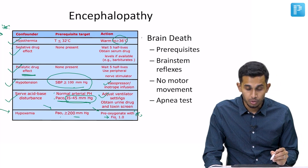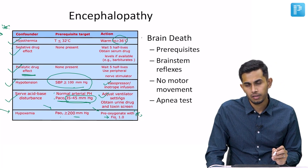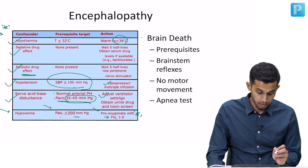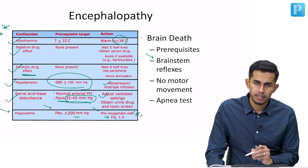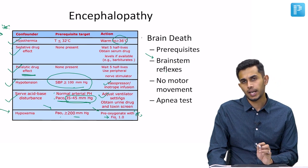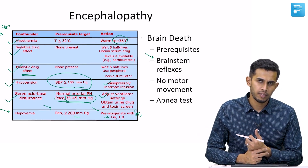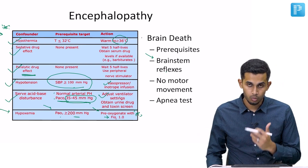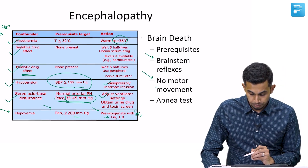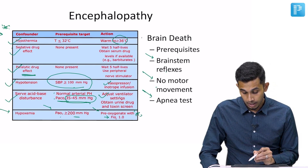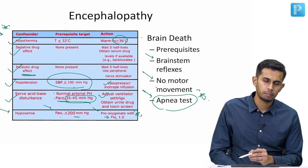These are the prerequisites: there should not be hypothermia, sedative drug effect, or paralytic drug effect. BP must be more than 100, ABG should show PaCO2 of 35 to 45, and there should not be hypoxemia. Then we examine the patient's brainstem reflexes — doll's eye response, light response, caloric test, and gag reflex — to confirm brainstem is not functioning. No motor movement should be present. Finally, we must do the most important test: the apnea test, to conclude that the patient is brain dead.